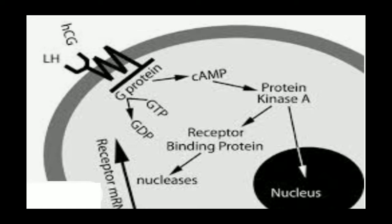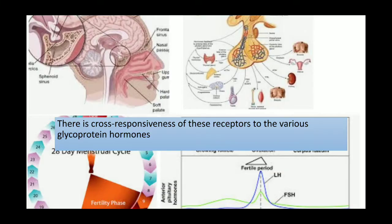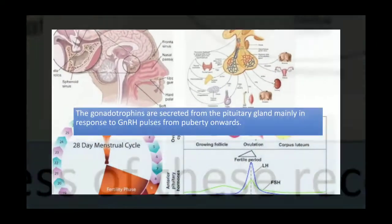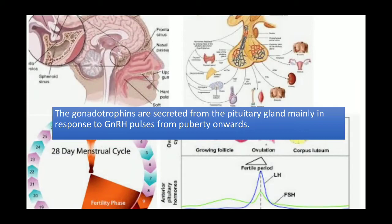The increase in cAMP causes activation of protein kinase, which acts on the nucleus. It can work on receptor binding proteins and activates nucleases. Another important point is there is cross-responsiveness of these receptors to various glycoprotein hormones. The gonadotropins are secreted from pituitary glands.